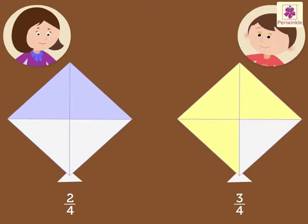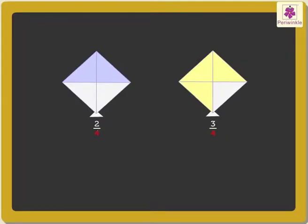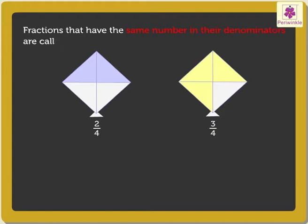Let's find out who colored more. Did you notice that both the fractions have four in their denominators? Fractions that have the same number in their denominators are called like fractions. Hence, here we will only compare the numerators, as their denominators are the same — that is, four.